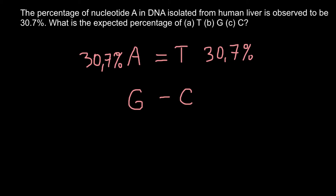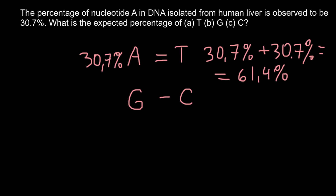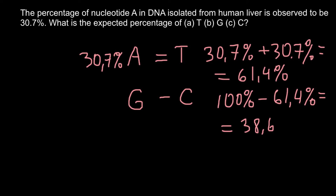Now it's very easy to find the quantity of guanine and cytosine. We add 30.7% plus 30.7%, and we know that this pair makes 61.4% total. That means the guanine-cytosine pair makes the rest: 100% minus 61.4% gives us 38.6% for guanine and cytosine combined.